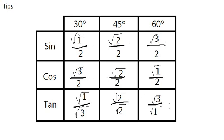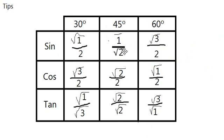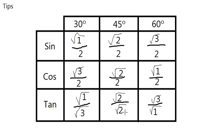Now, if you paid attention, sine 45 in the original chart is 1 over root 2, not root 2 over 2. And tangent 60 is root 3, not root 3 over root 1. And tangent 45 is 1, not root 2 over root 2. But they are absolutely the same — they have no difference at all.